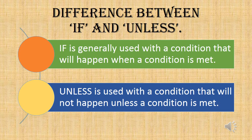Now let us understand the difference between 'if' and 'unless'. 'If' is generally used with a condition that will happen when a condition is met. For example, if I do this work, will I get an ice cream? 'Unless' is used with a condition that will not happen unless a condition is met. For example, unless I do this work, I should get an ice cream.